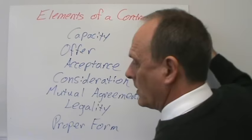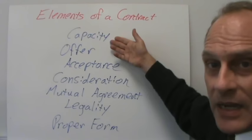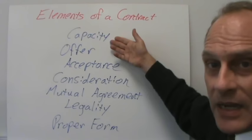To summarize, here are the elements of a contract: capacity, offer, acceptance, consideration, mutual agreement, legality, and proper form. Those are the elements of a contract.